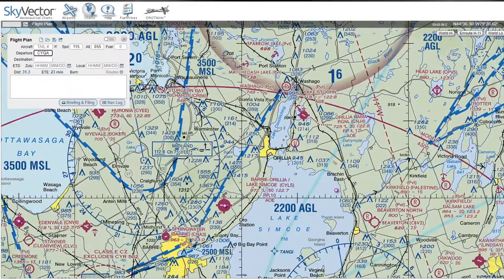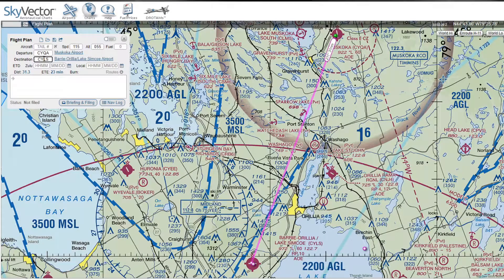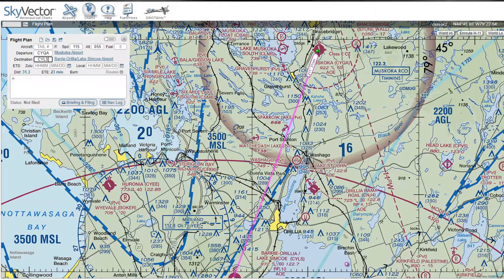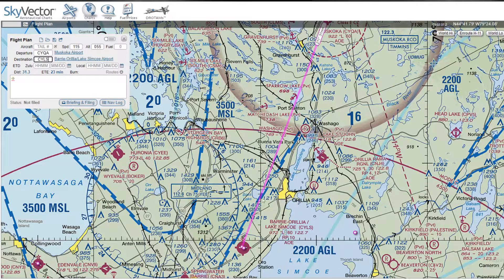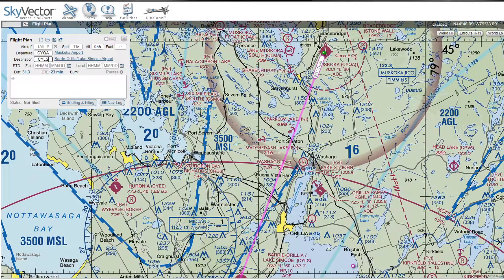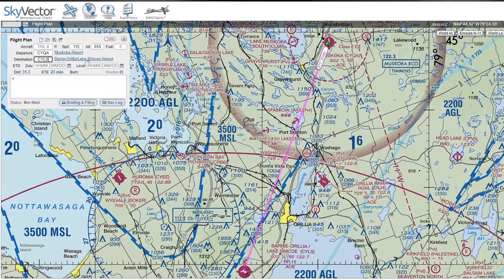We're going to be heading southwestbound to C-Y-L-S, Barrie Lake Simcoe. Now if you look, it shows you the line — basically our track line — how far it is, and what heading to fly. We're going to be flying 211 degrees roughly. It'll be 31 nautical miles of flying, so about 23 minutes. We're going to be flying at a cruising speed of around 115. I'm not going to get into flight planning with speed, time, and weather — we're just going to go through the basics right now.